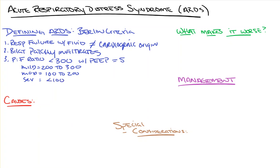In layman's terms, the amount of oxygen in the blood compared to the amount of oxygen we are giving the patient is low. That's because the condition makes it so you cannot adequately exchange oxygen from these damaged, fluid-filled, neutrophil-filled alveoli into the blood. Normally, we breathe 21% oxygen — that's the air — and a normal PaO2 is about 80 to 100, making our ratio about 475.